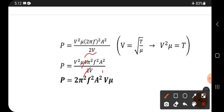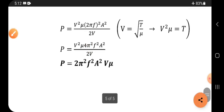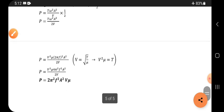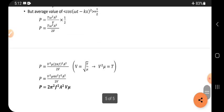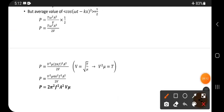So this is the final formula. This is our power formula, the energy transportation formula: P = 2π²f²A²vμ. Okay friends, thank you.